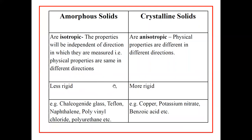Examples of amorphous solids include chalcogenide glasses, Teflon, naphthalene, polyvinyl chloride, polyurethane, etc. Examples of crystalline solids include copper, potassium nitrate, benzoic acid, etc.